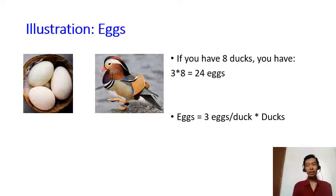Now you can say that the number of eggs that you have equals 3 eggs per duck times the number of ducks that you have. Because 3 times 8 equals 24. Or if you want to create a symbol for all these variables...